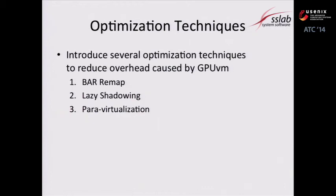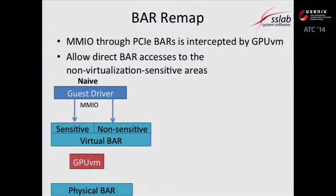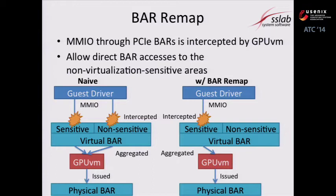GPU VM successfully isolates GPU resources, but it incurs large overheads. To reduce these overheads, GPU VM introduces several optimization techniques. The first is VAREMAP: GPU VM intercepts MMIO through PCI Express, but intercepting all MMIO operations is expensive. In VAREMAP, accesses to virtualization-sensitive areas are intercepted by GPU VM, while GPU VM allows direct accesses to the non-sensitive area from VMs, reducing interception costs.